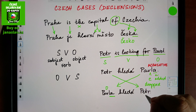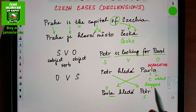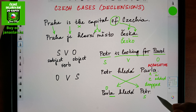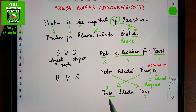So how do I know it's the object Pavla and not a woman named Pavla looking for Peter? Because Petr is in the basic form — nothing has changed. Though that sentence could also be a bit confusing, since it could mean that Pavla is looking for Petr — but of course it would be clear from the context.